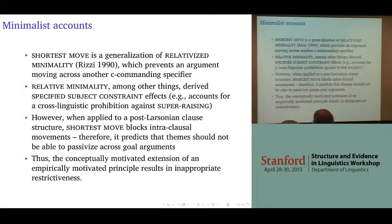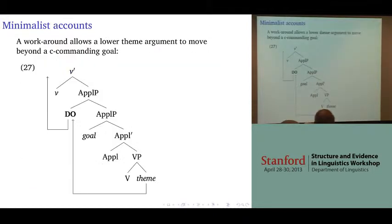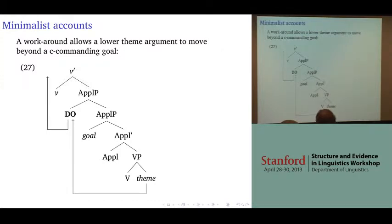This conceptually motivated extension of an empirically motivated principle results in inappropriate restrictiveness. The workaround that you often find has something of the following flavor: the theme moves up, crosses the goal as a second specifier, and then from that second specifier position is able to move on up and passivize.